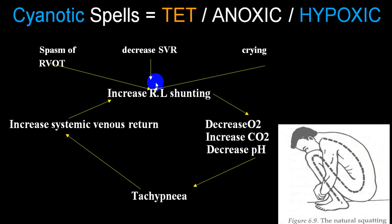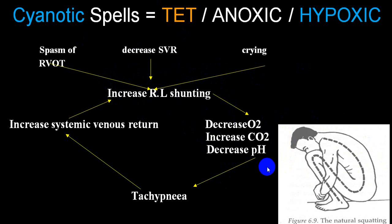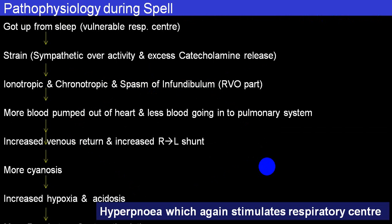There is increased right-to-left shunting causing severe hypoxia, increased CO2, and metabolic acidosis due to more lactic acid production. When the patient acquires a squatting posture, peripheral vascular resistance increases, more blood enters pulmonary circulation, and the person gets relief from the cyanotic or hypoxic spell.